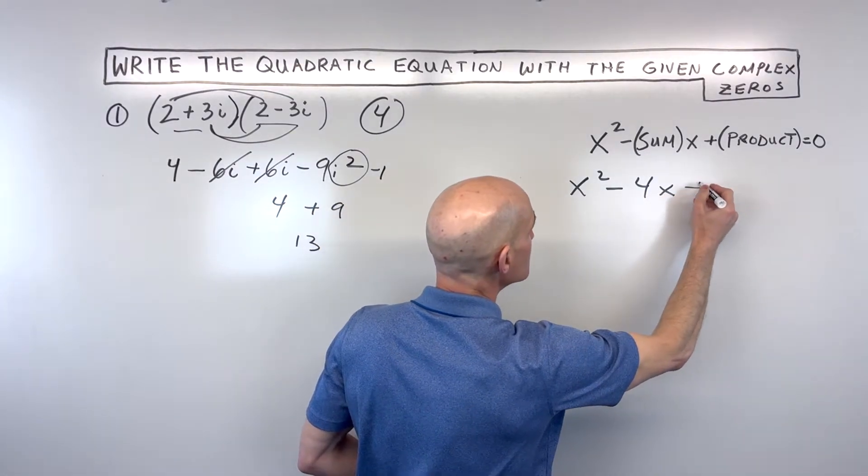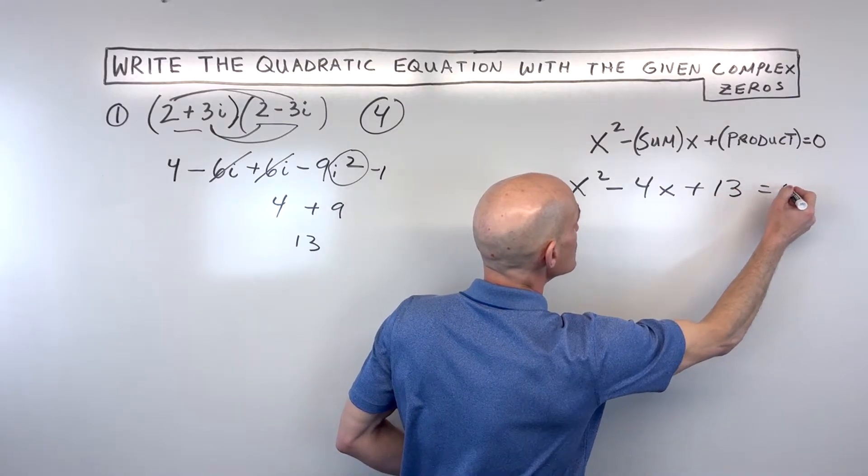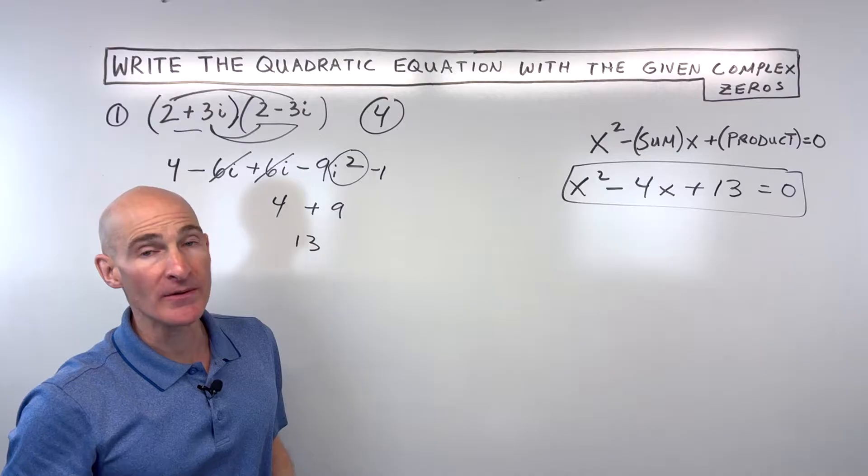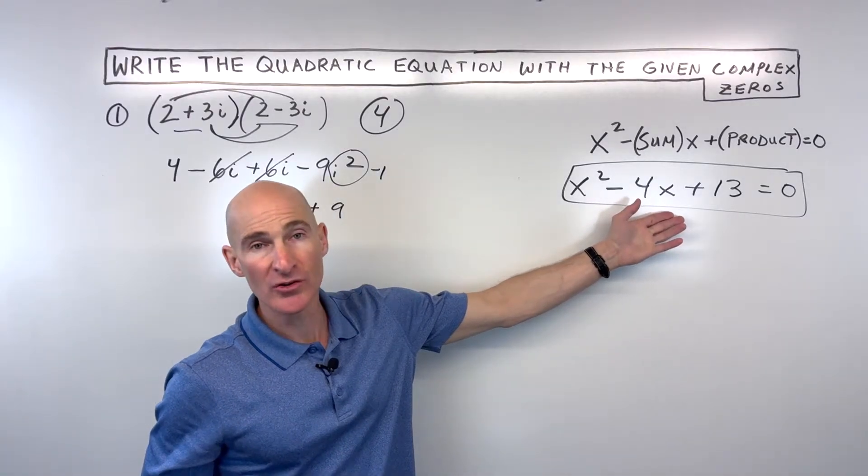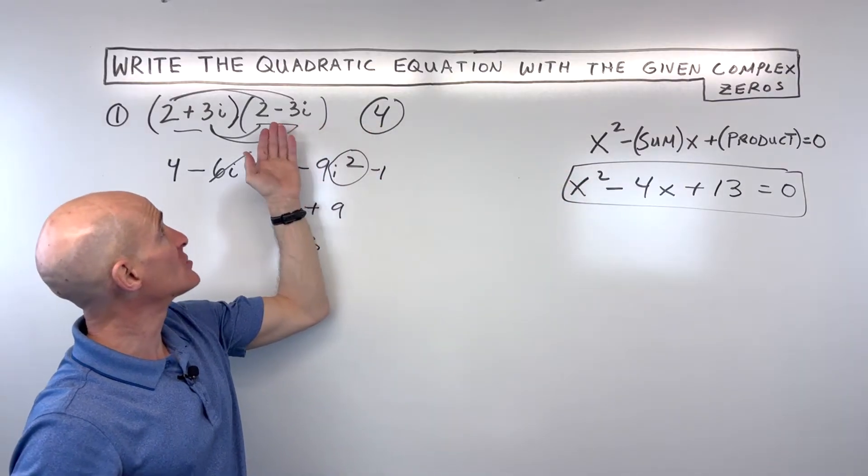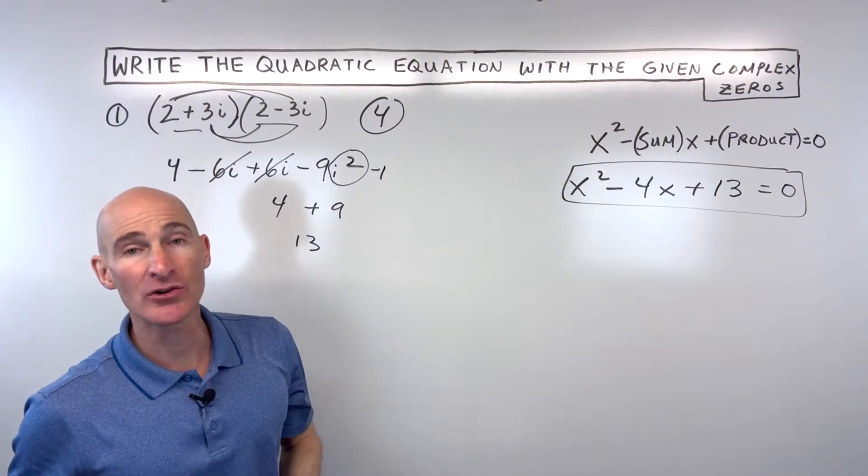4 plus 9 is 13. So this represents the product of our zeros. And now we have our quadratic equation. So you can check this if you want to do the quadratic formula or if you want to complete the square. And you're going to get back these two original complex zeros.